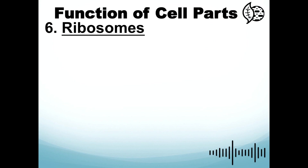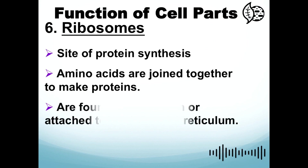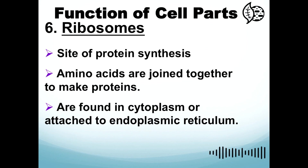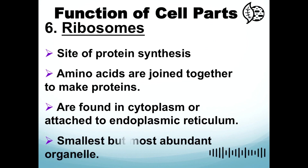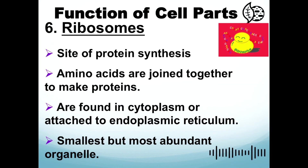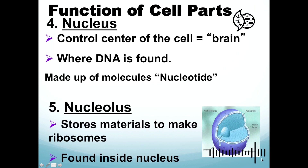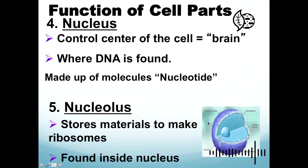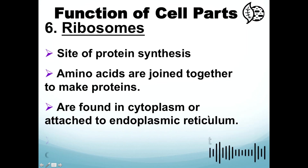Ribosomes are the site of protein synthesis, where amino acids are joined together to make proteins. They are found in the cytoplasm or attached to the endoplasmic reticulum and are the smallest but most abundant organelle. Ribosomes produced in the nucleus go out to the cytoplasm and also directly to the endoplasmic reticulum.